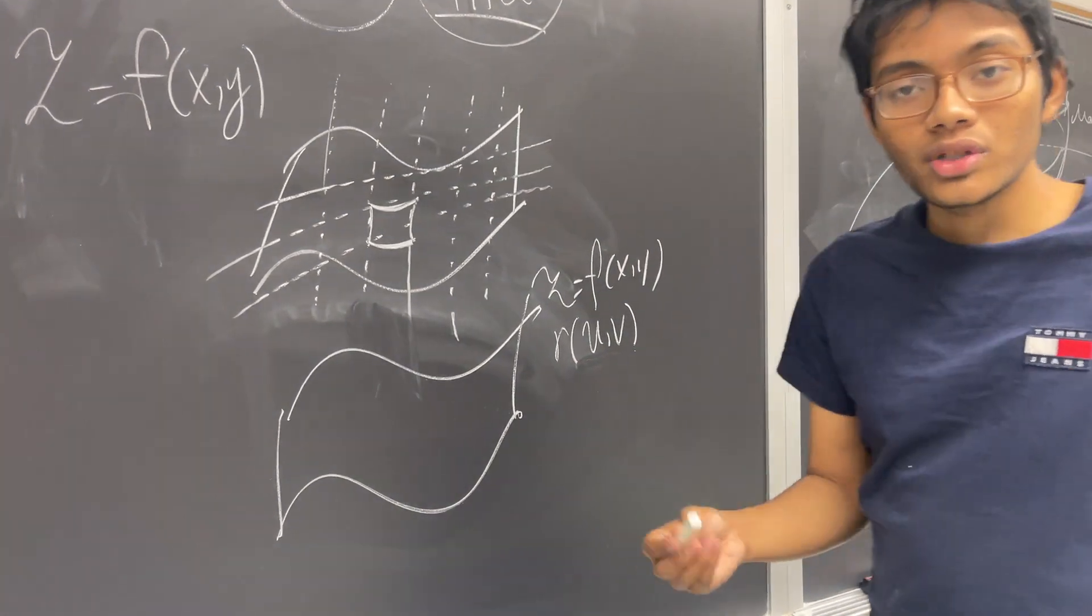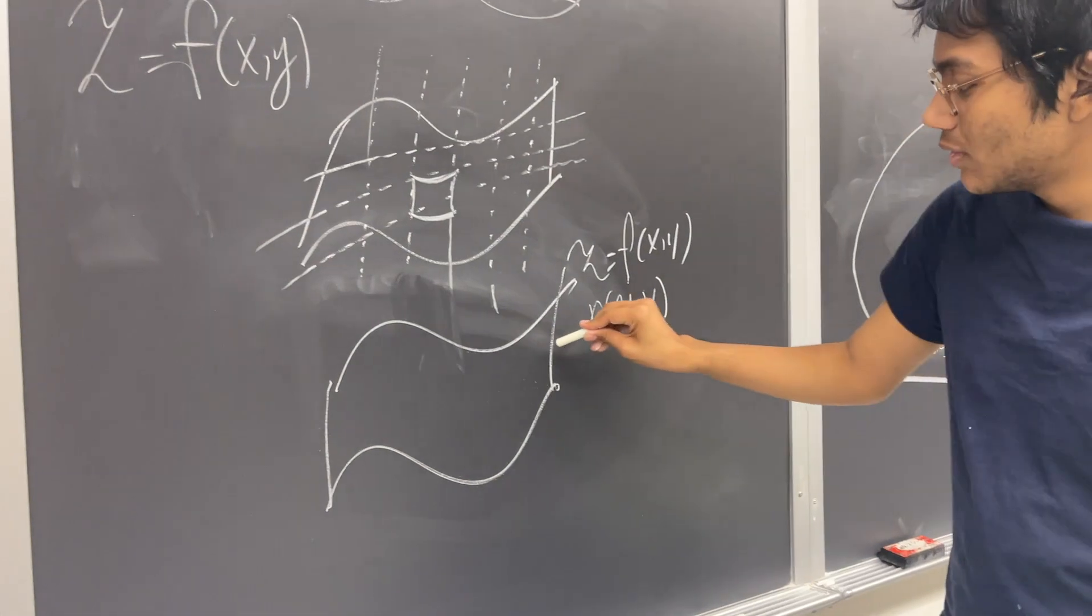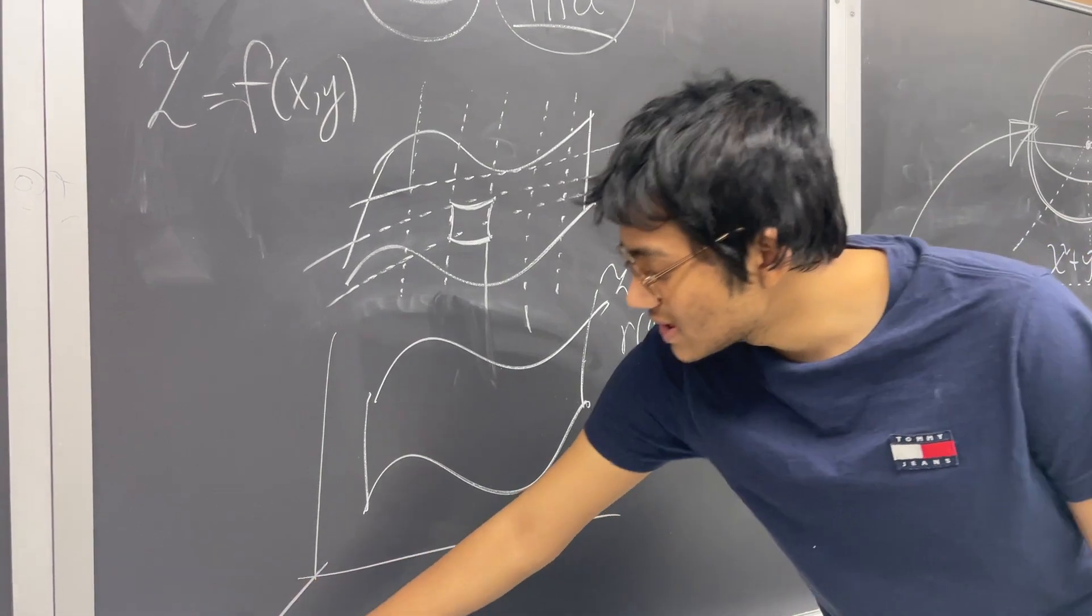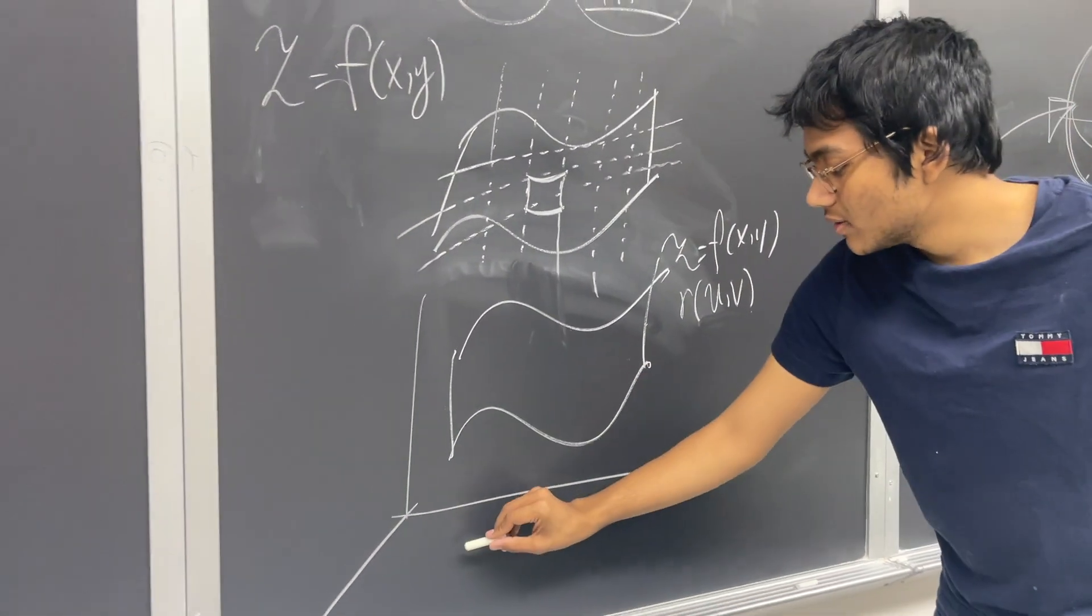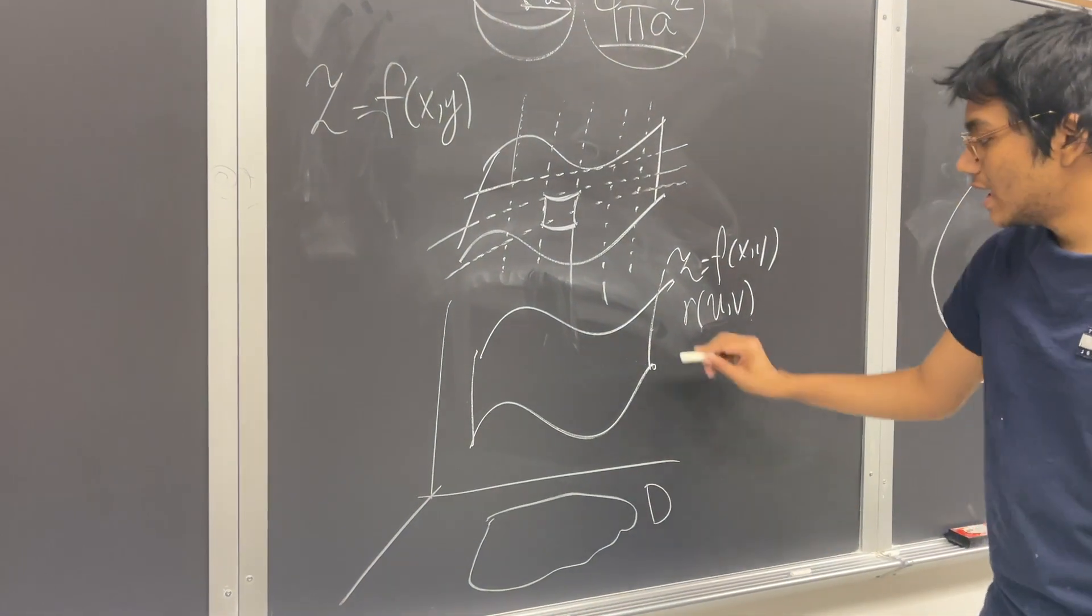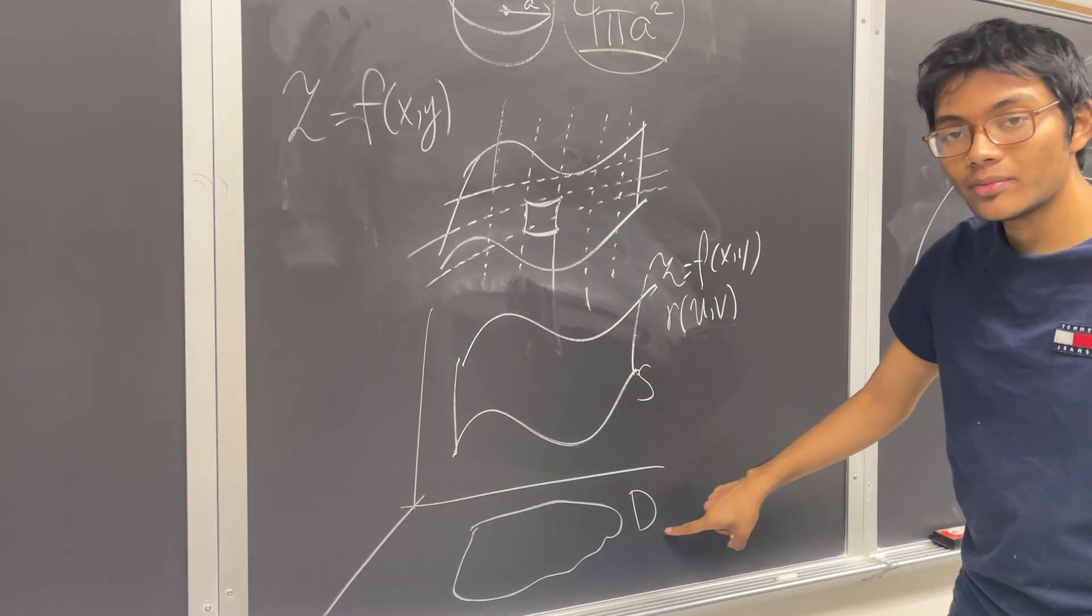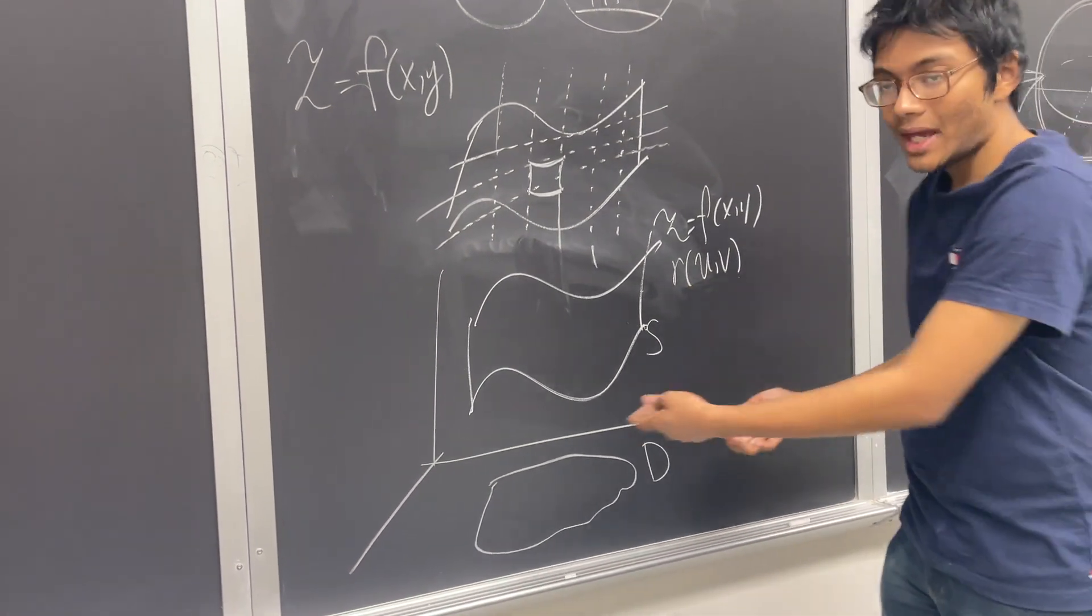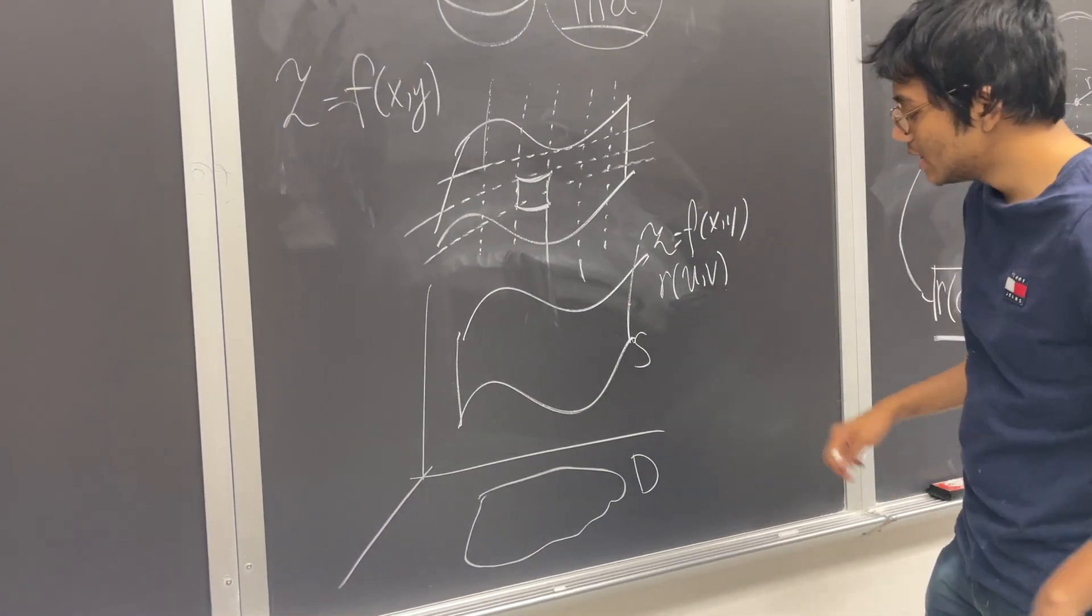Now if I hold one of these parameters constant, let's say I hold u constant. So this surface is defined on some domain. Some domain, let's call it d. And this is the surface itself. So we have the domain d and the surface s. And what I'm doing is I'm mapping this domain to the surface.